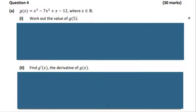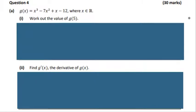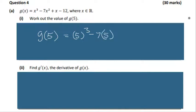The first part is mainly a calculator question — it's the input of 5 instead of x across the board. So g of 5 is equal to 5 cubed minus 7 by 5 squared plus 5 minus 12. Take your time and be careful with the sign. We'll get a final result of negative 57.